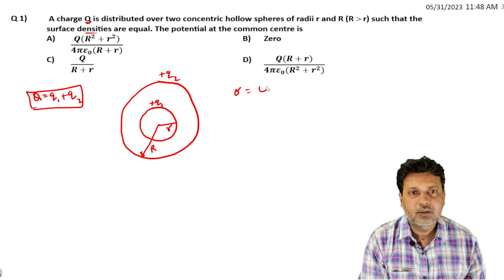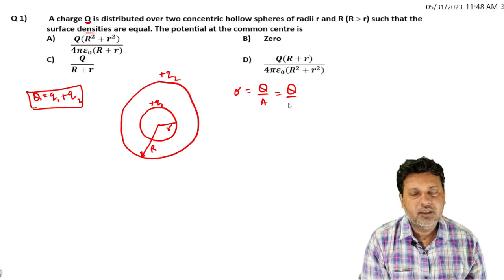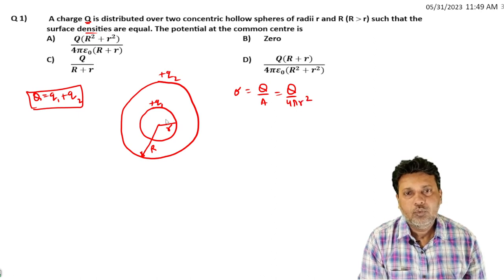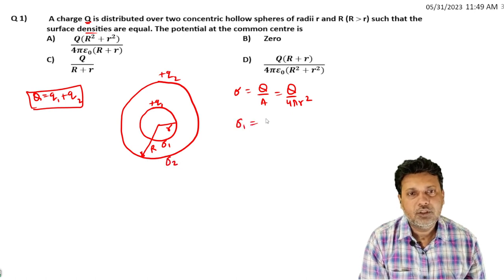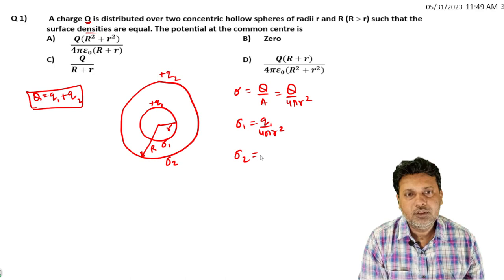Surface charge density σ = total charge divided by area. For a spherical body, the curved surface area is 4πr². So σ1 (inner sphere) = q1 / (4πr²) and σ2 (outer sphere) = q2 / (4πR²). Since the surface densities are equal, σ1 = σ2.